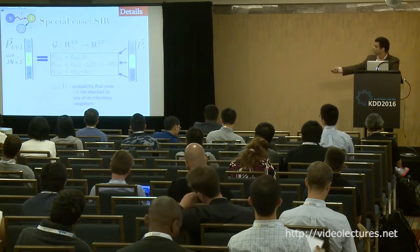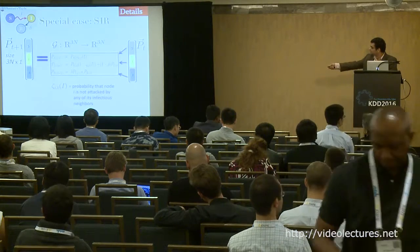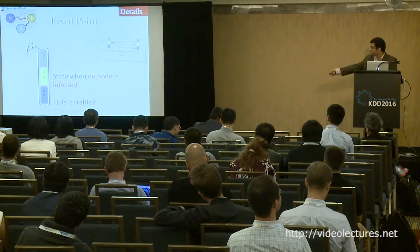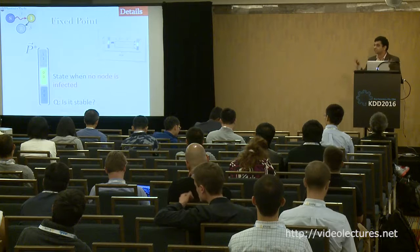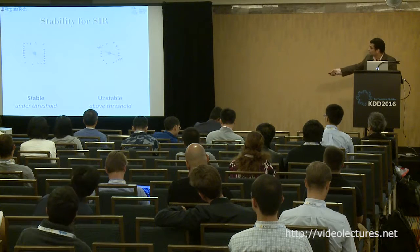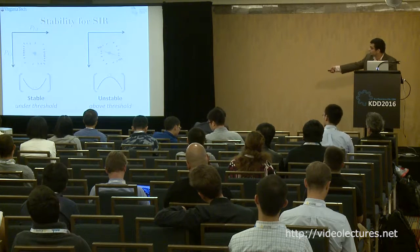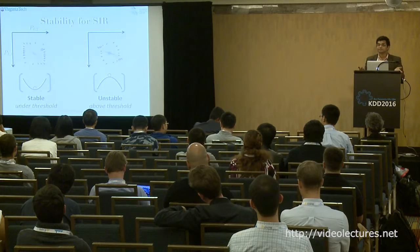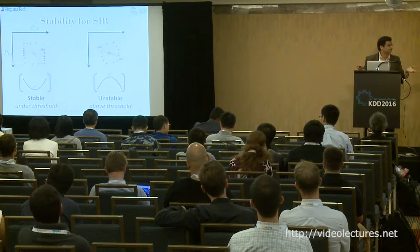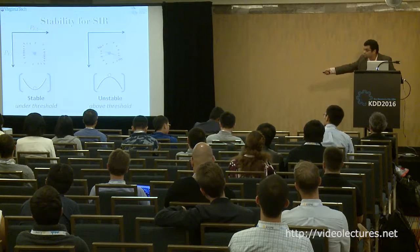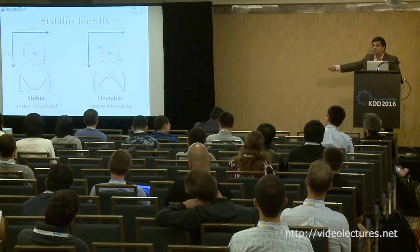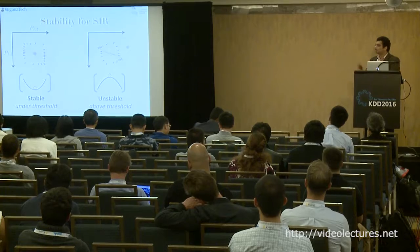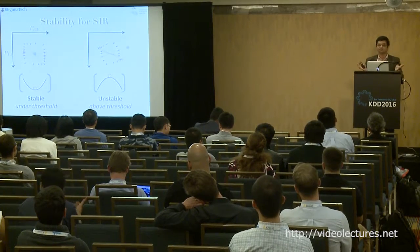For SIR as a special case, G gives PT+1 from PT. The fixed point is when no node is infected. The question: is it stable? Below threshold: infecting one node (perturbing the system) causes it to come back to zero infections — stable. Above threshold: a perturbation leads to more and more nodes getting infected — unstable. There is already theory in nonlinear systems to characterize these two regimes cleanly. The main takeaway: the epidemic threshold for arbitrary networks for almost any model depends on lambda and a constant.